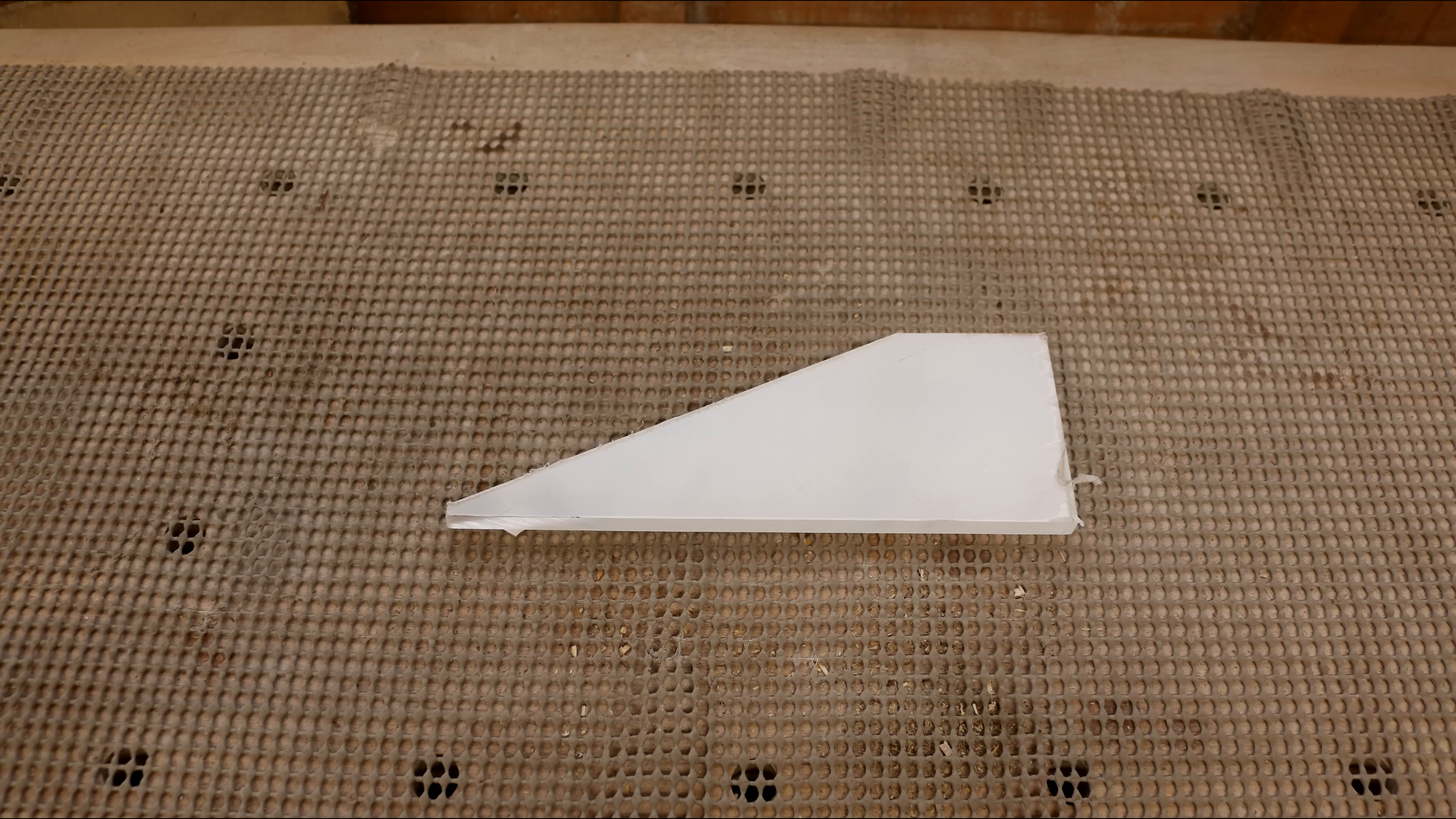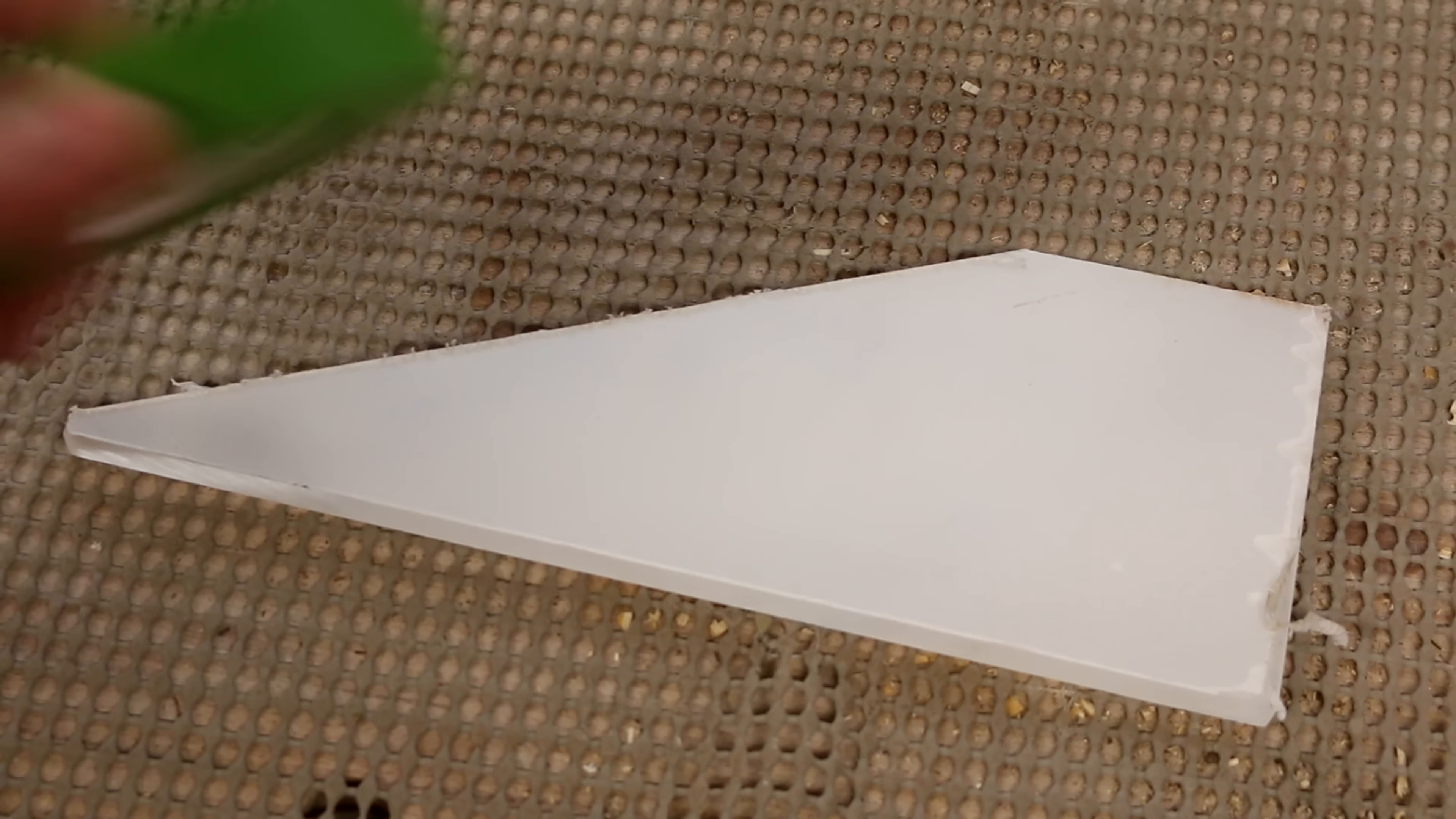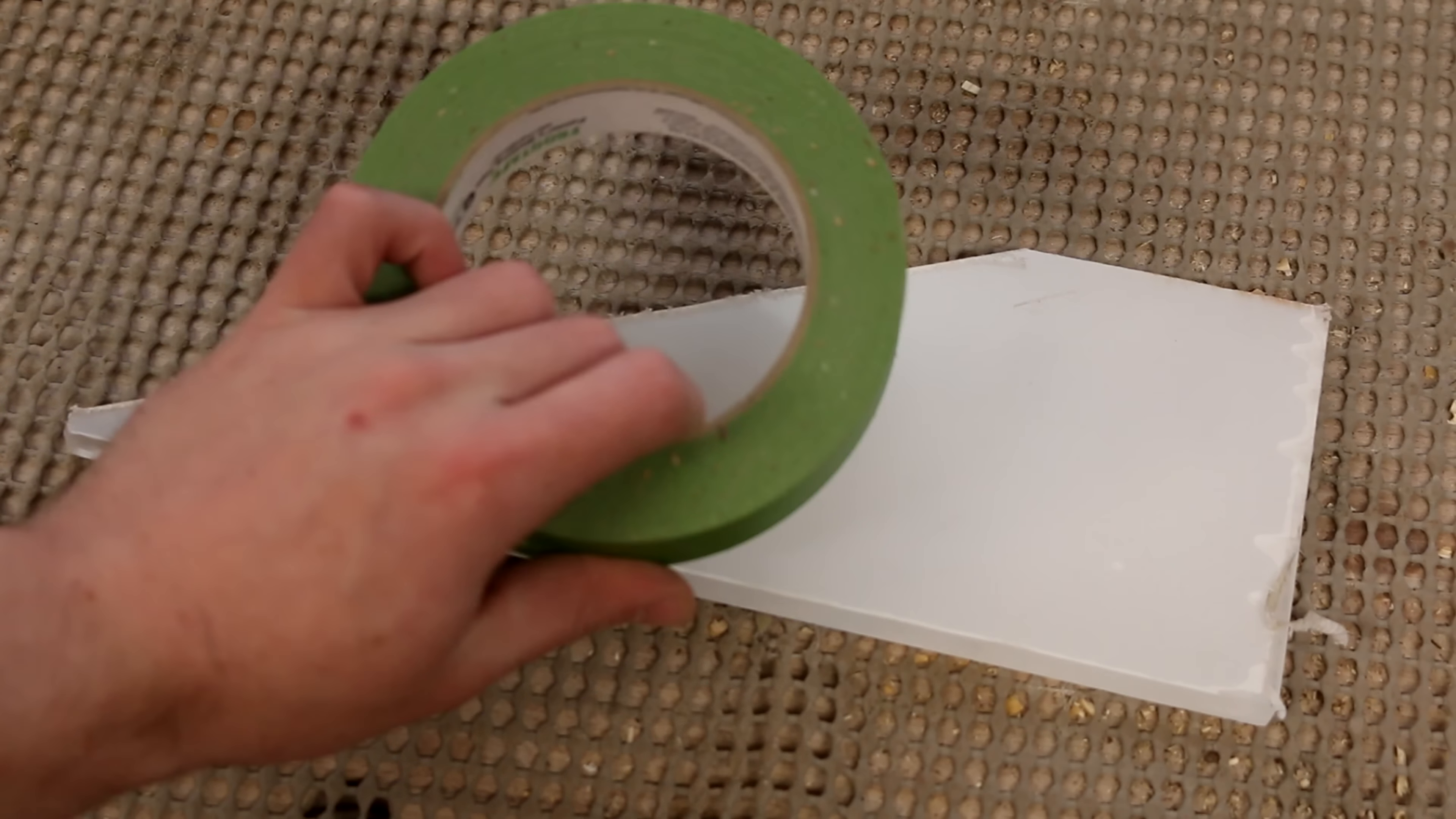Just for this example I'm using the scrap perspex from the Def Leopard light. Ideally I would have printed a design and stuck it down, but just to show you that it is possible to do by hand I'll create a freehand design. I stuck some painters tape onto the perspex to make it easier for the pen to work.